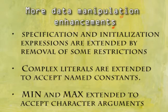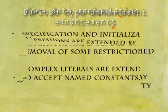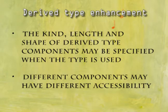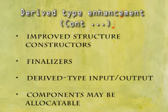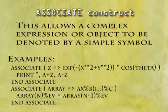More data manipulation enhancements: specification and initialization expressions are extended by removal of some restrictions. Complex literals are extended to accept named constants. Min and max are extended to accept character arguments. Derived type enhancements: the kind, length, and shape of derived type components may be specified when the type is used. Different components may have different accessibility. Improved structure constructors, finalizers, and derived type input/output components may be allocatable.